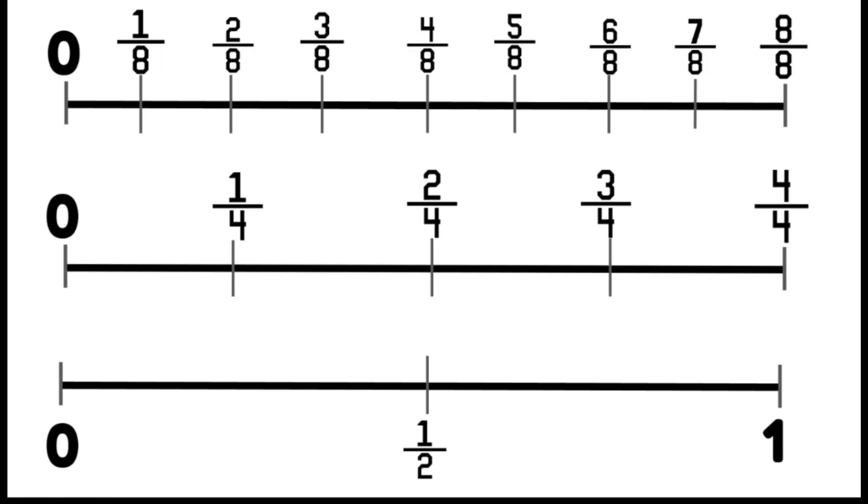Now we can find equivalent fractions. We're finding fractions that line up perfectly on those three number lines. Two eighths and one quarter line up perfectly on the number line and are equivalent fractions.